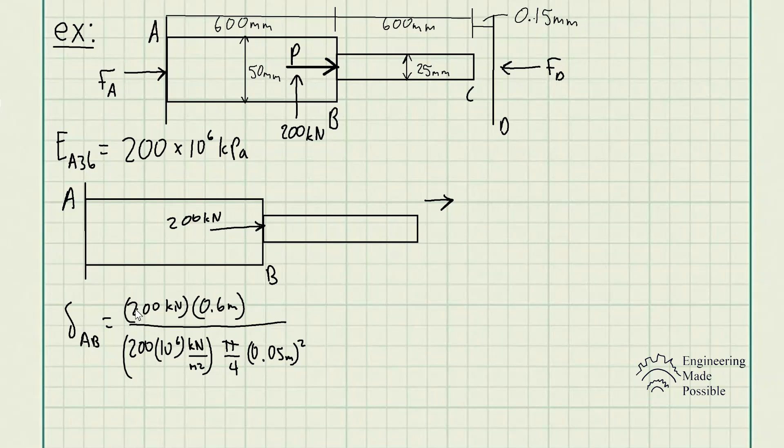In this case, you would apply the 200 kN times the length of this first segment, which is 0.6 meters, divided by the modulus of elasticity, times the cross-sectional area of this particular rod. So in this case, it's 0.05 meters squared times pi over 4.